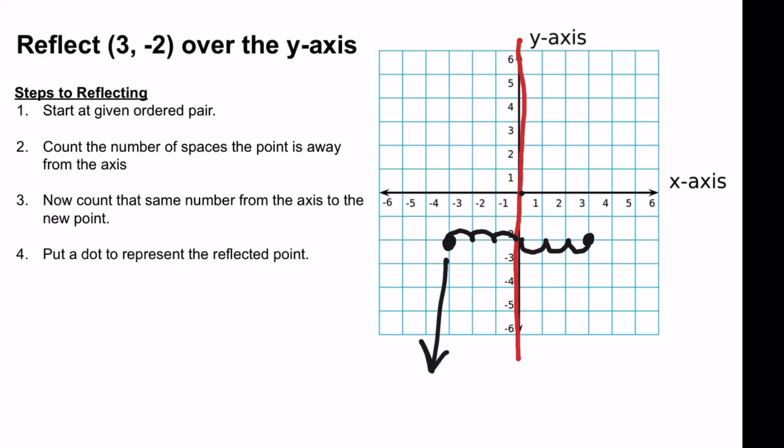So this ordered pair is negative 3 and negative 2. And that is how you reflect points over the x and y-axis.